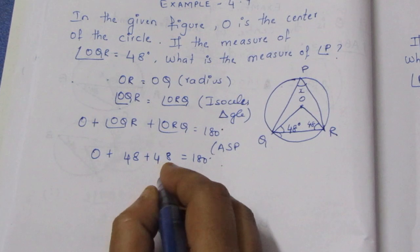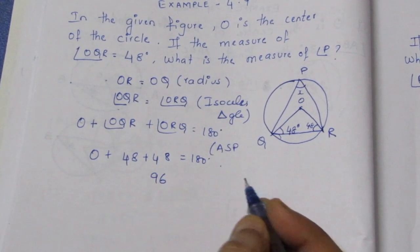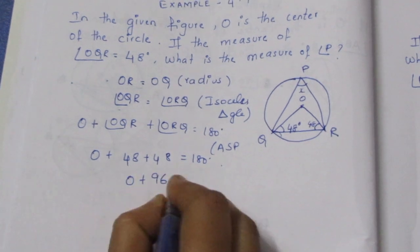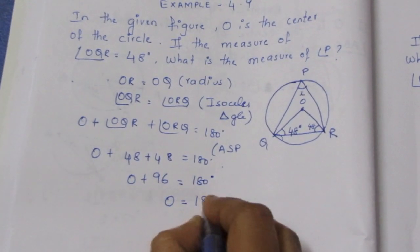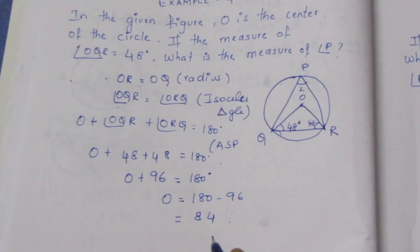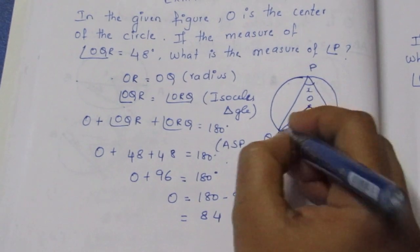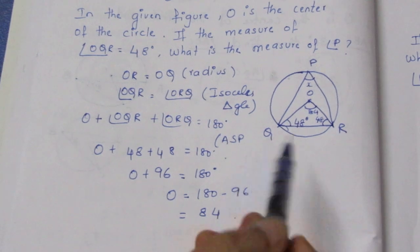O plus 96 equals 180. So O equals 180 minus 96, which equals 84. O is equal to 84, so angle QOR equals 84 degrees.